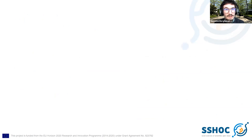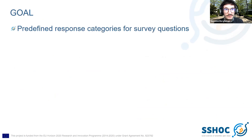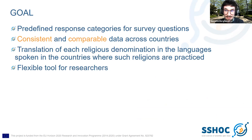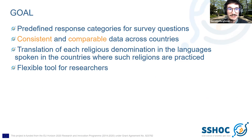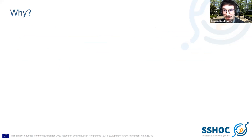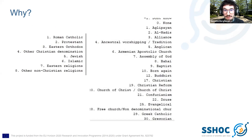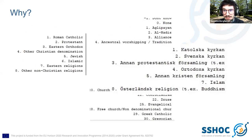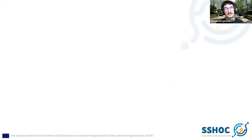Our goal is to offer a flexible tool for researchers — a predefined set of response categories for survey questions that allows researchers to have consistent and comparable data across countries. The final aim is to translate each religious denomination into the languages spoken in the countries where these religions are practiced. This is important because if you're a researcher of religious denominations working with surveys, you find different surveys with different sets of codes, different labeling, and spend a lot of time harmonizing and recoding everything.